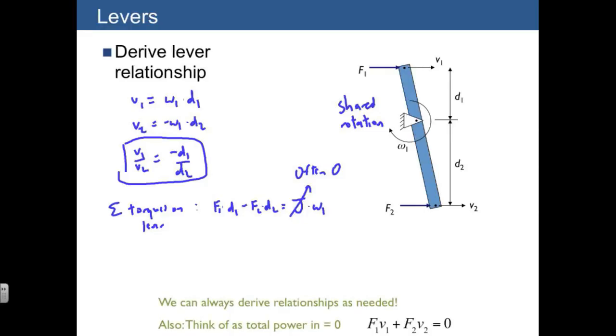Another way you can think about these relationships is that the total power into a lever should be equal to zero. It has no way of dissipating any energy, so we would have the power going in of F1 times V1 and F2 times V2. Both of these simultaneously go in, and then that has to equal zero if it's massless. If it's not massless, then actually this power also goes into increasing the kinetic energy of the lever.